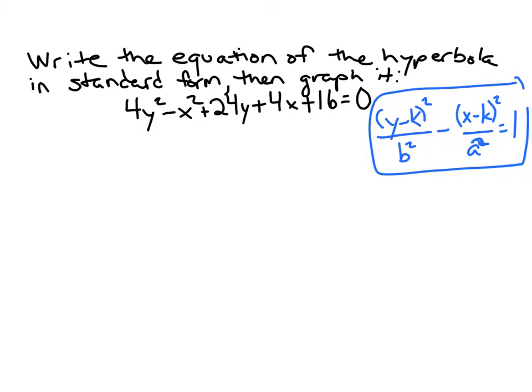The first thing that I would suggest is to group the y terms in one parentheses so 4y² and then we've got the 24y and group the x terms in another parentheses. Now be careful.